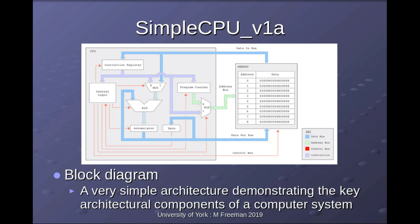The first generation were valve-based computers, then second generation with discrete transistors, and third generation were integrated circuits — the processor was spread over multiple PCBs, printed circuit boards. The fourth generation, where we live today, is where your processor is a single VLSI chip — very large-scale integration. You may ask: if we live in the land of fourth generation, why are we looking at a first-generation computer? It's to introduce the fundamental ideas.